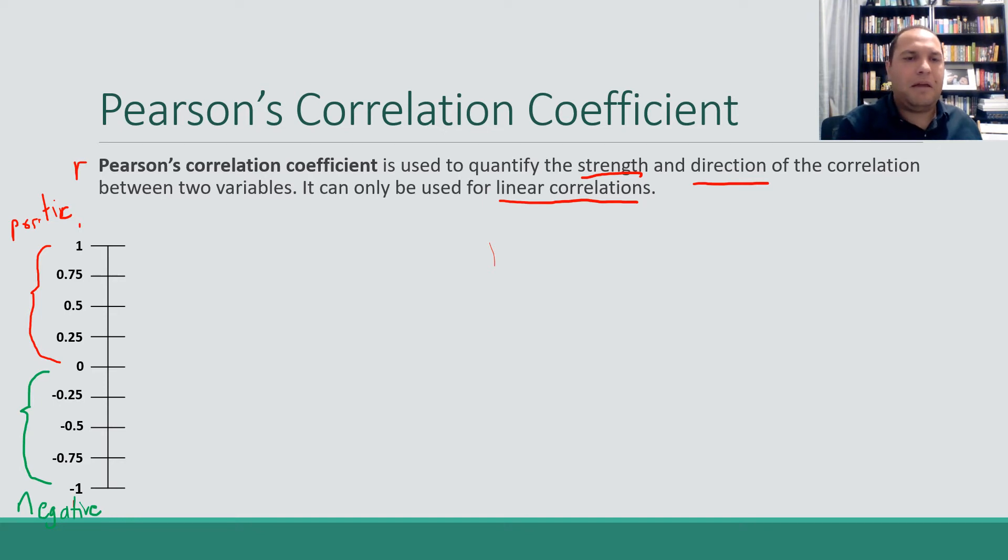Now, the actual values themselves. One will be a perfect positive correlation. Negative one will be a perfect negative correlation. And then we can use our adjectives as we go through from there. So between 0.75 and 1, you'd be talking about a strong correlation. And the same way between negative one and negative 0.5, we'd be talking about a strong correlation.